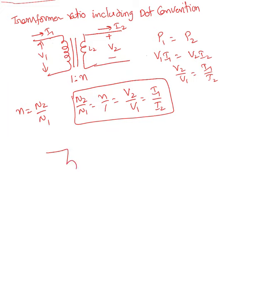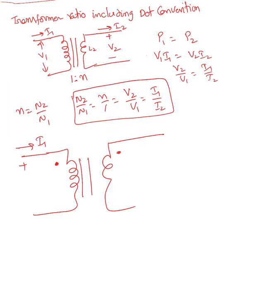Here is the first example. In this example there are two dots, and i1 current is entering. Here is v1 and v2. Say i2 current is also entering. The turns ratio is 1:n. According to dot convention, i1 is entering the dot, so the dotted terminal must be positive — and we do have the positive terminal — so n over 1 equals v2 over v1.